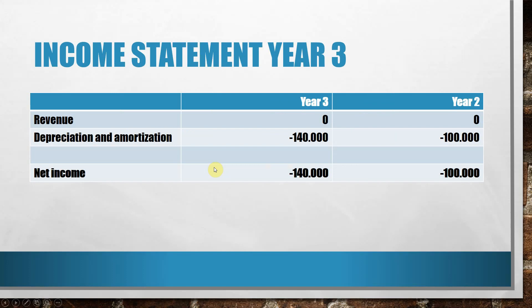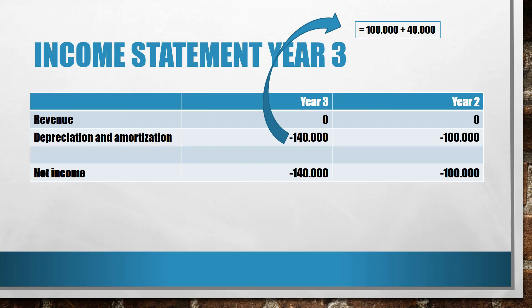The income statement for year three still has no revenues or anything else, only depreciation. However, the depreciation increased to 140,000 euro, because we not only have the 100,000 euro depreciation from the initial equipment but also the additional 40,000 euro from the new equipment purchased in year three. So the net income in year three would be minus 140,000 euro — a loss of 140,000 euro.